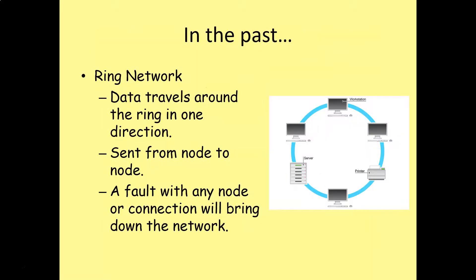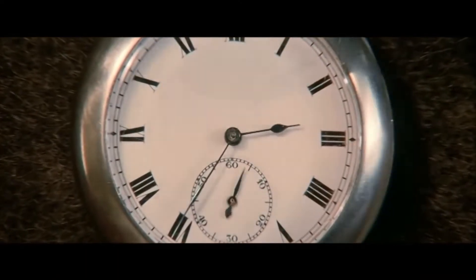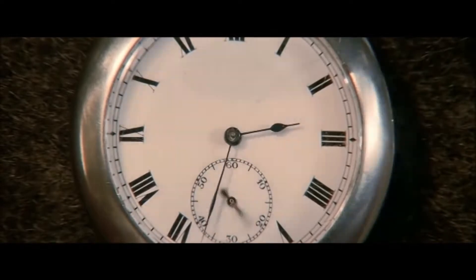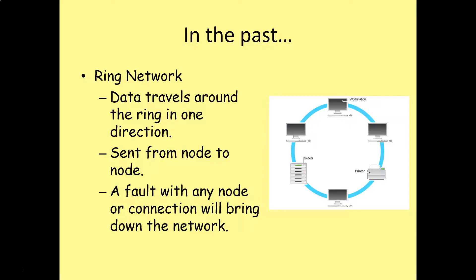So in the past, one of the types of topologies we might have used was a ring network topology. Data travels around the ring in one direction. It's sent from node to node. So a fault with any node or any connection between the nodes will bring down the entire network.